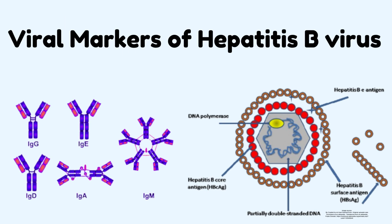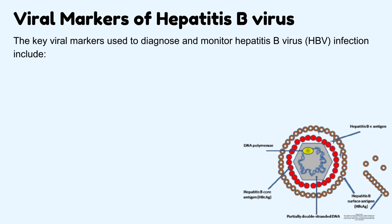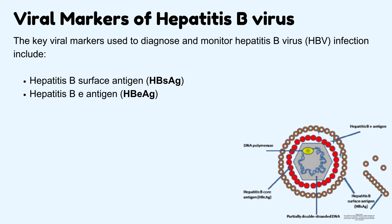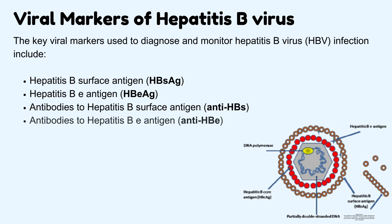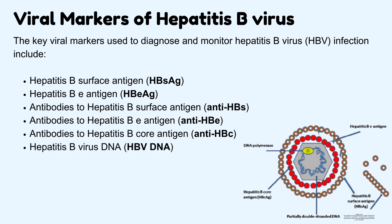The key viral markers used to diagnose and monitor hepatitis B virus infection include: hepatitis B surface antigen (HBsAg), hepatitis B E antigen (HBeAg), antibodies to hepatitis B surface antigen (anti-HBs), antibodies to hepatitis B E antigen (anti-HBe), antibodies to hepatitis B core antigen (anti-HBc), and hepatitis B virus DNA (HBV DNA). We will discuss them one by one.